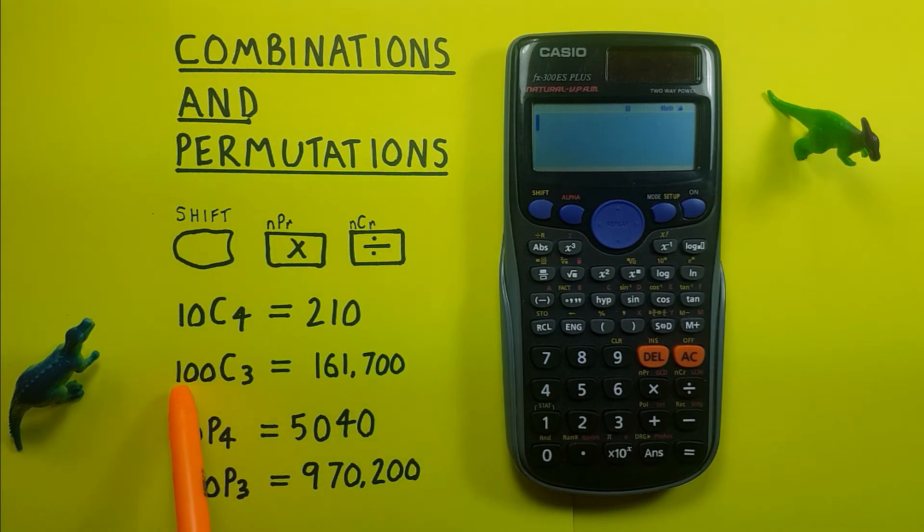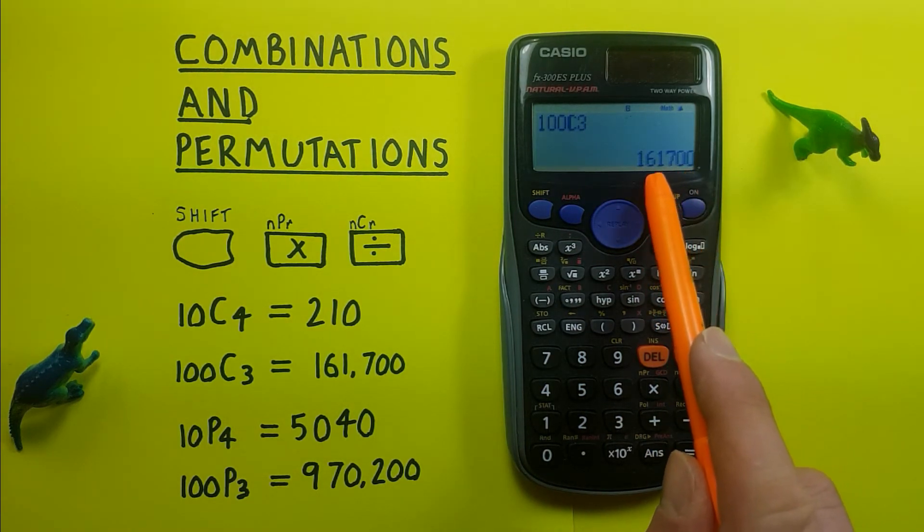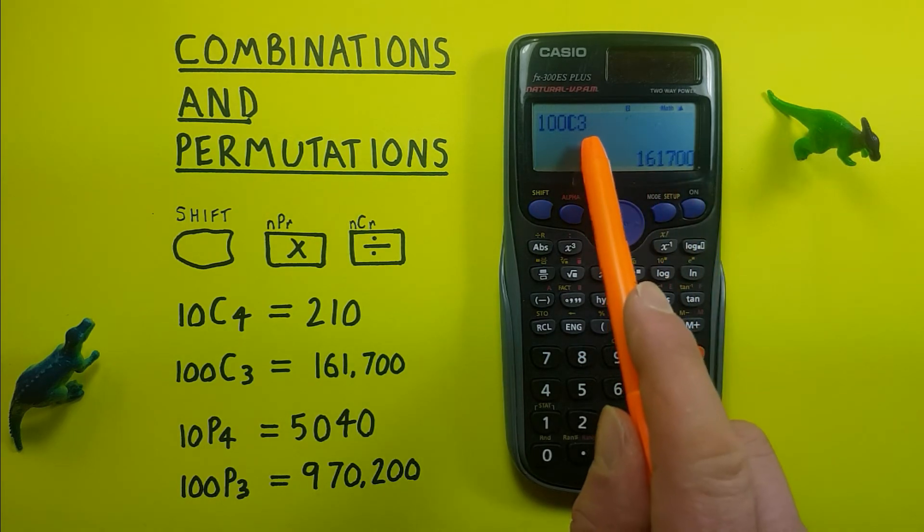Another example: if we have 100 objects and choose 3, we enter 100, shift division, there's our C, then 3 and equals. We see there are 161,700 possible combinations choosing 3 from 100.